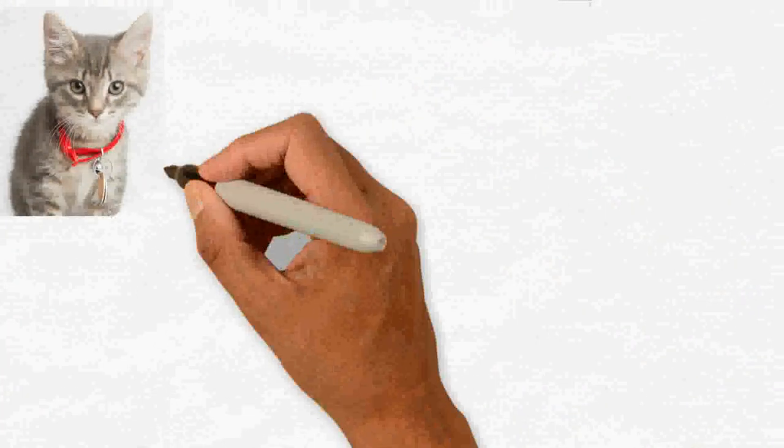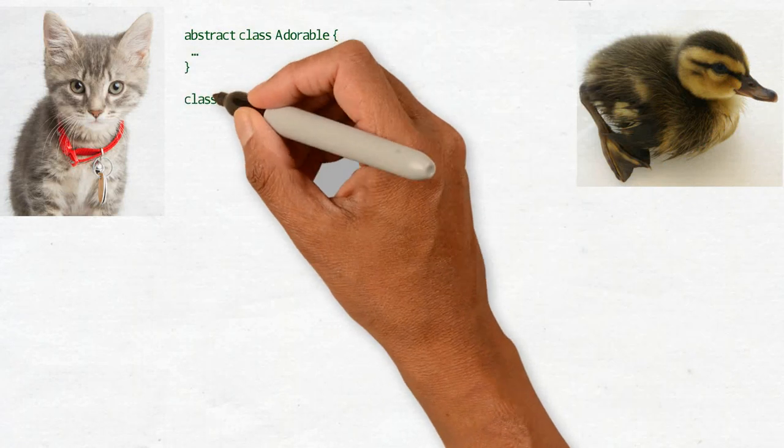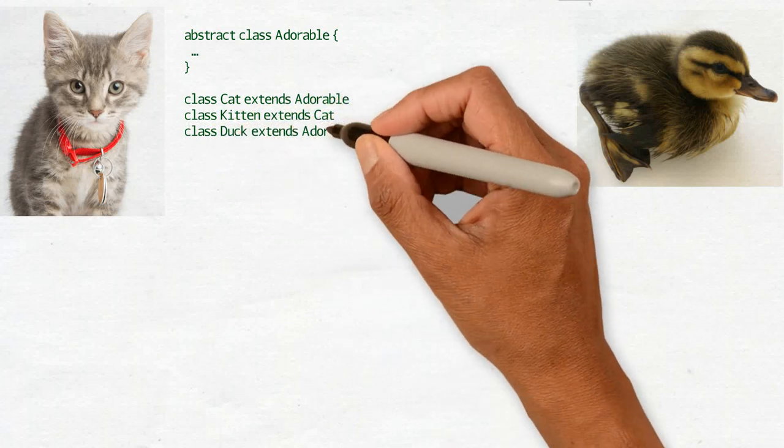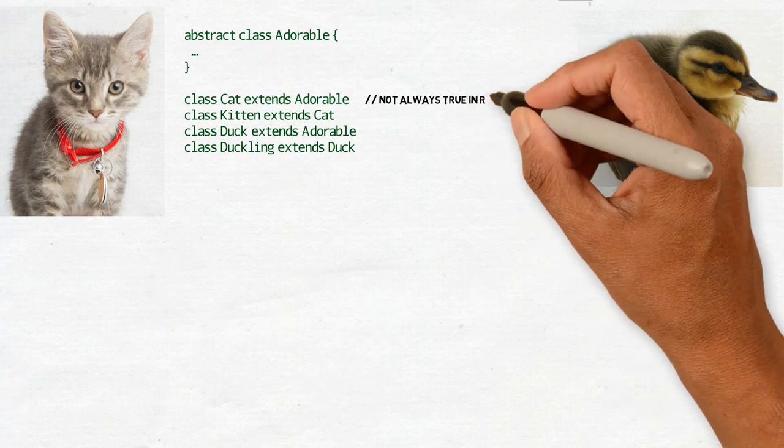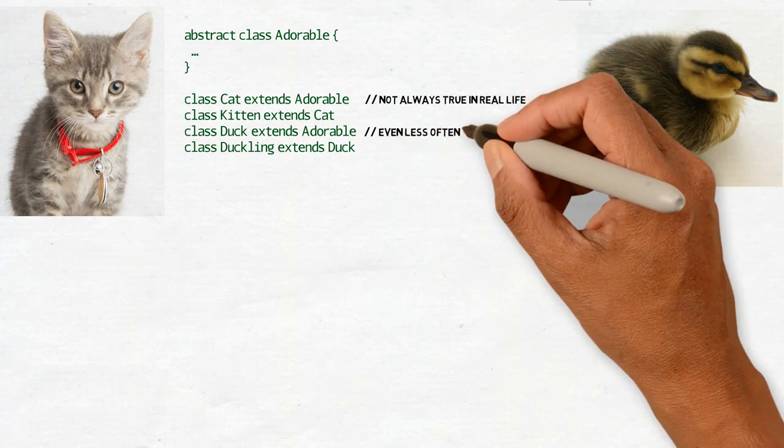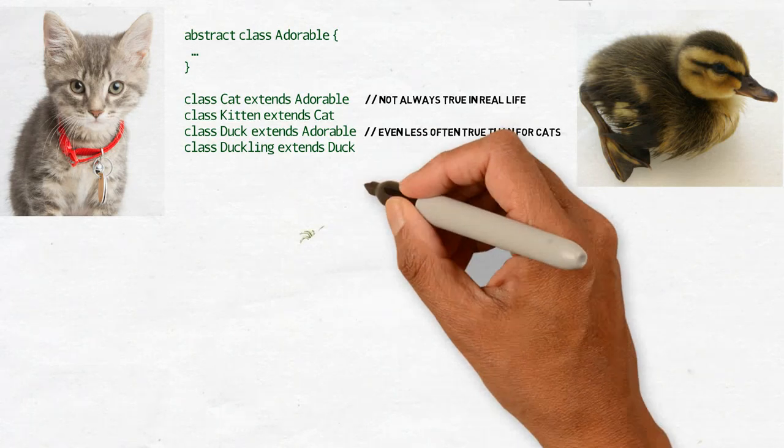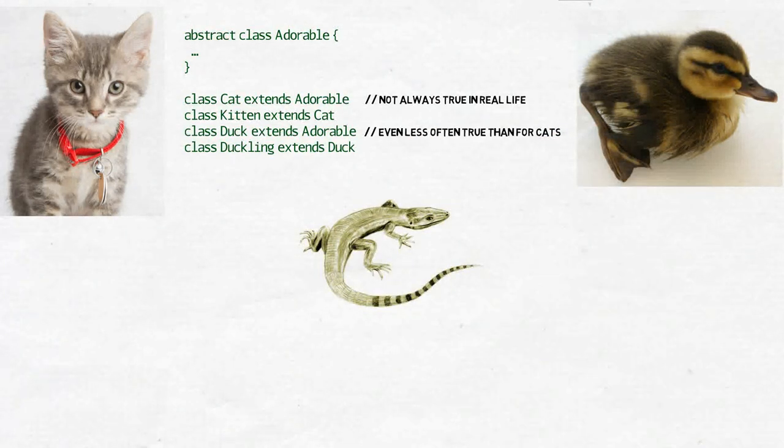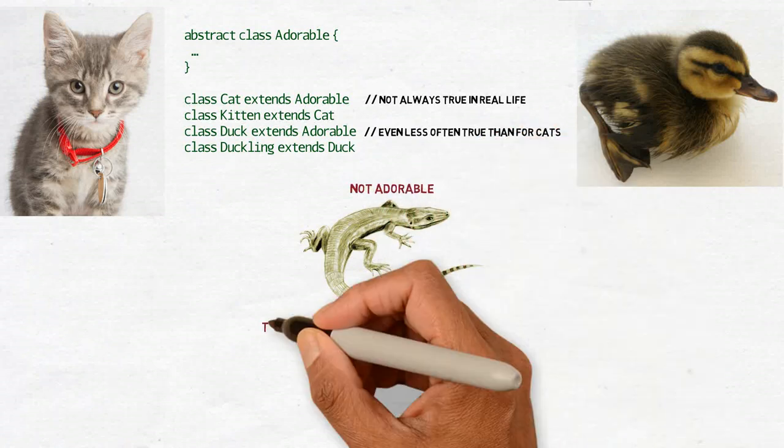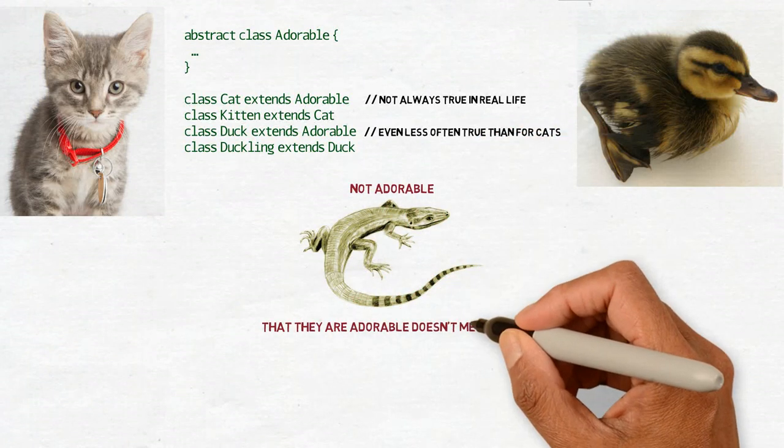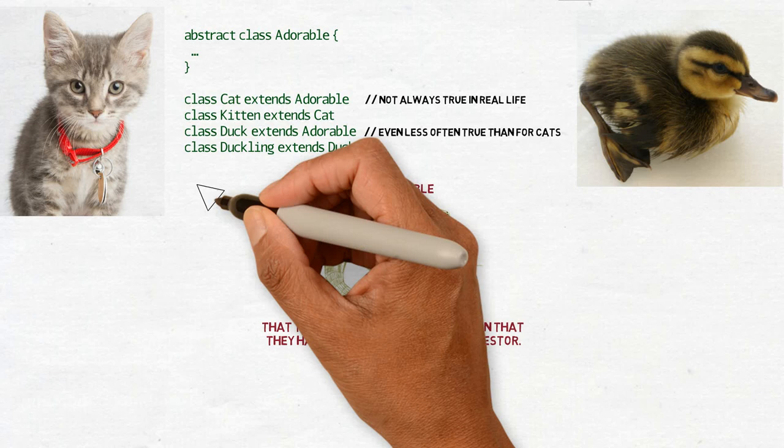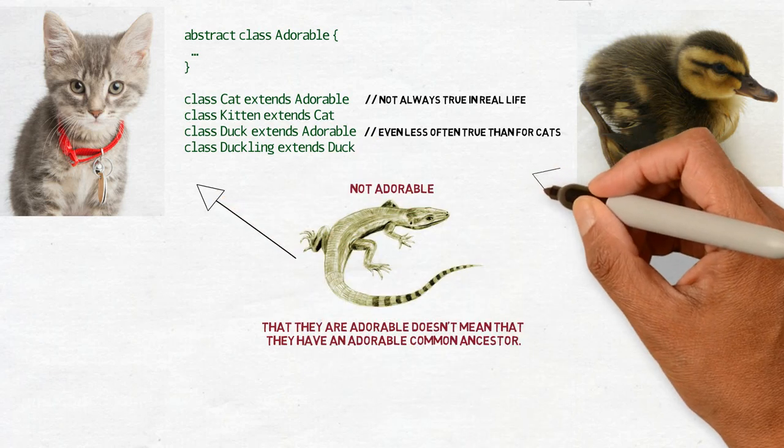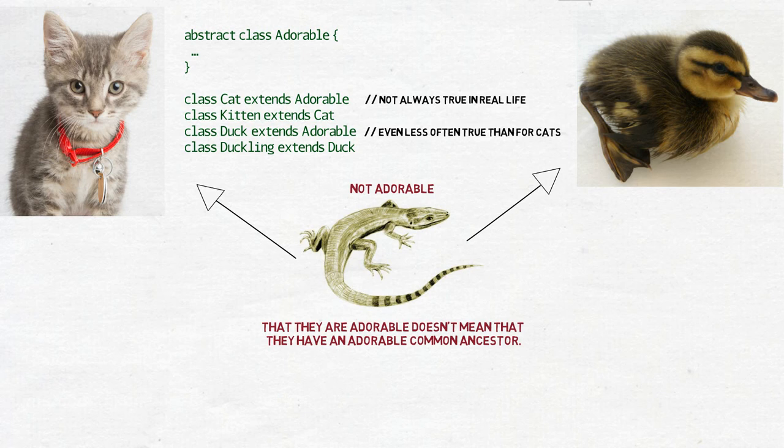Imagine, for example, a kitten and a duckling. They are both adorable. As you can see, something is not right here. Even if they are adorable, it doesn't mean that they both have a common ancestor that was the adorableness itself. The last common ancestor of cats and ducks was probably a small, definitely not adorable reptile living from 350 million years ago. Them being adorable is not something they inherited. It's a trait they developed independently from each other. And on top of that, sometimes they lose it when they turn into adult animals.